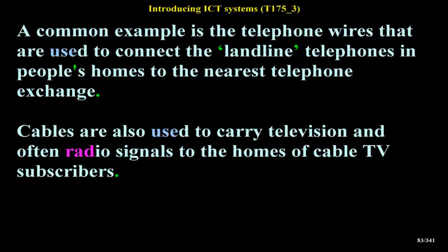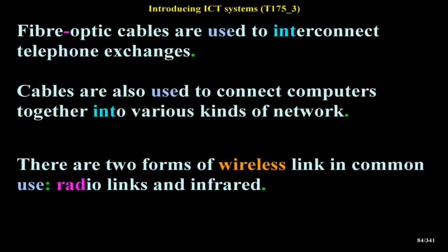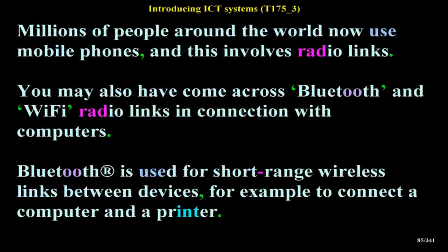Cables are also used to carry television and often radio signals to the homes of cable TV subscribers. Fiber-optic cables are used to interconnect telephone exchanges. Cables are also used to connect computers together into various kinds of network. There are two forms of wireless link in common use: radio links and infrared. Millions of people around the world now use mobile phones, and this involves radio links. You may also have come across Bluetooth and Wi-Fi radio links in connection with computers.